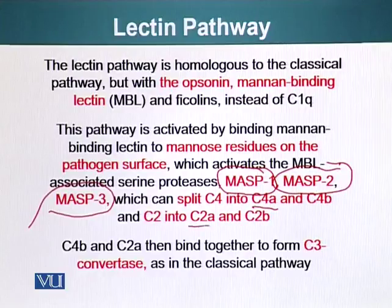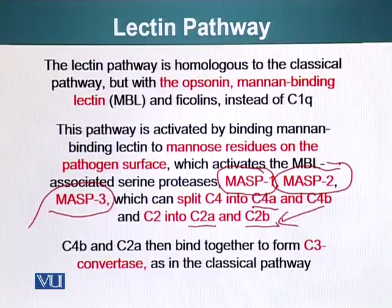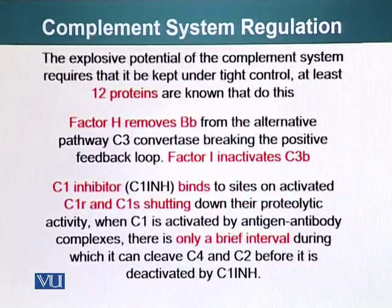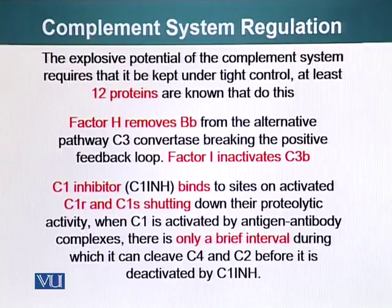These proteases, abbreviated as MASP1, MASP2, and MASP3, can split C4 into C4A and C4B, and also C2 into C2A and C2B. C2B and C4B join together, settle on the surface of the pathogen, and act as the C3 convertase, cleaving C3 into C3A and C3B. After that, C3B is formed, C5 will also be cleaved, and the membrane attack complex will again be assembled.